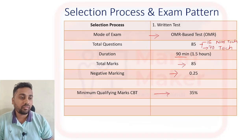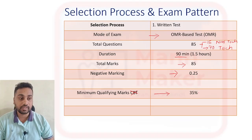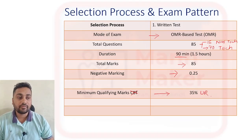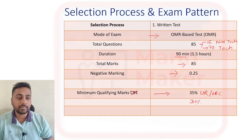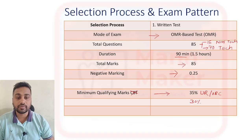For qualifying, at minimum you need to score 35 percent and above for your category. For OBC and other categories, at least 30 percent marks are required to pass the written exam.